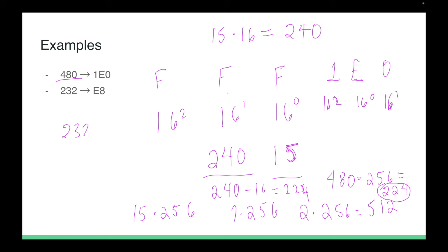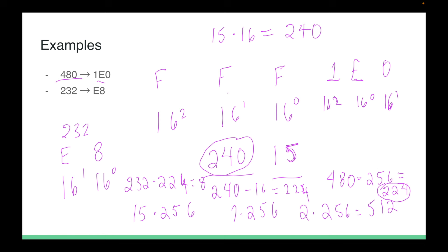For 232: E×16=224 (since E=14), and 232-224=8, so the result is E8. This is a quick overview of converting between hex, binary, and denary. If you don't completely understand this, YouTube has many videos on the process since it's a pretty common topic.